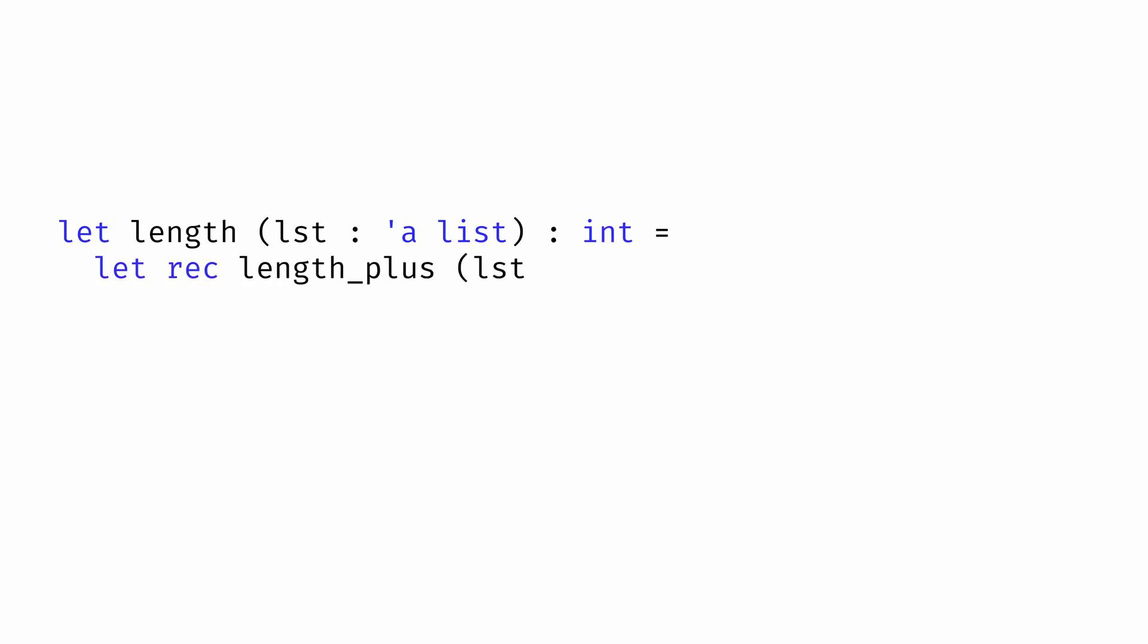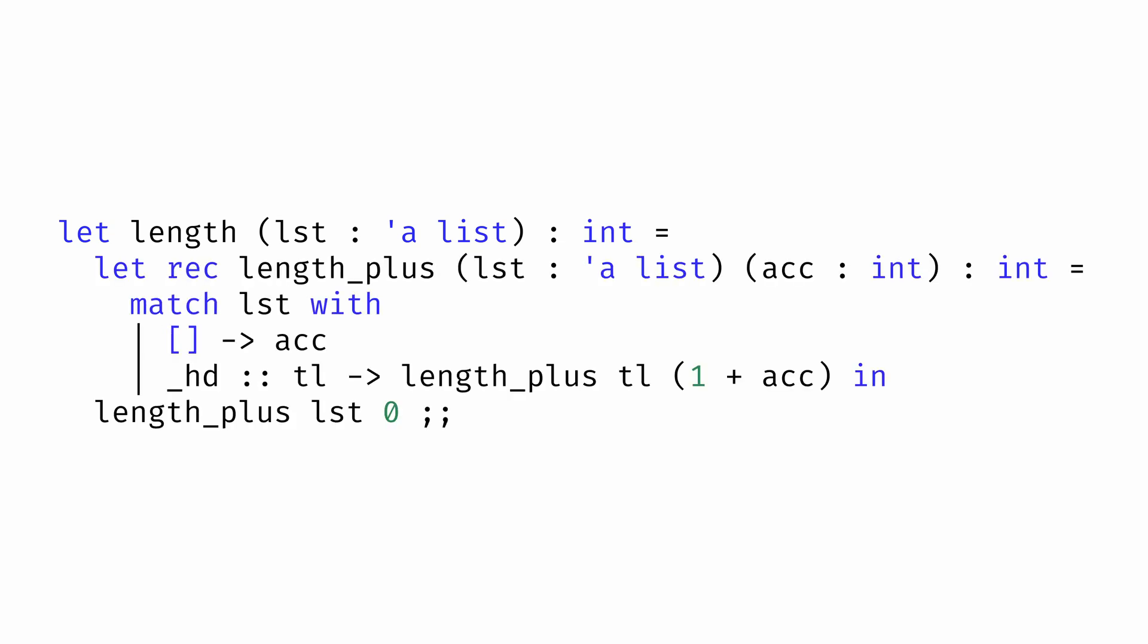Here's what that might look like. This is a tail recursive version of the length function. It defines an auxiliary function length plus, which will accept a list and return the length of the list plus whatever the value of this accumulator is. So if we call length plus on a list and zero, that's just the length of the list.